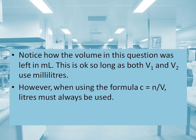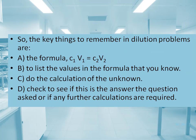Notice how the volume in this question was left in milliliters. This is acceptable so long as both V1 and V2 use milliliters. However, whenever we use the formula concentration equals moles divided by volume, liters must always be used. The key things to remember in dilution problems are: the formula C1V1 = C2V2, list the known values, calculate the unknown, then check whether further calculations are required to answer the specific question asked.